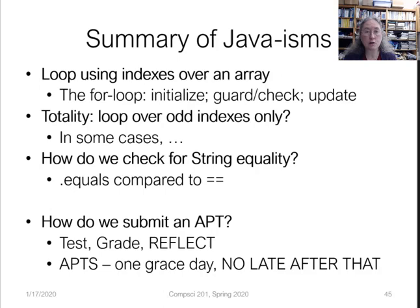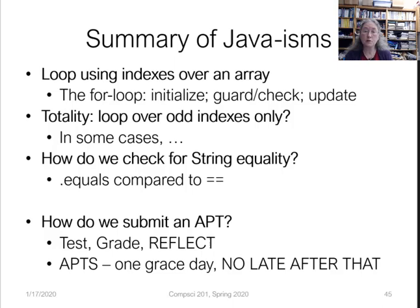Summary of what we did today: we learned about looping over arrays with an index so you can access items using that index. We also saw the enhanced for loop where you loop without an index. We looked at the totality APT — you need the index there to know if it's an odd or even position. For string equality, use dot equals, not double equals — double equals compares addresses, not values. To submit an APT, test it, grade it, and submit it; you'll get all green when it's done. Don't forget to fill out the reflect form on the course webpage.